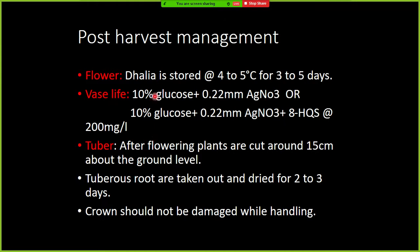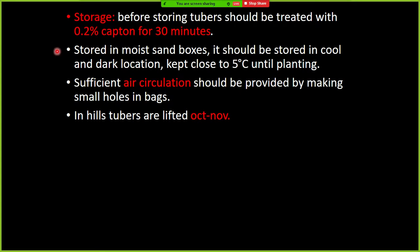For post-harvest management, Dahlias are stored at 4 to 5 degrees Celsius for 3 to 5 days. The vase life solution consists of 10% glucose, 0.22 mM AgNO3, or 10% glucose plus 0.22 mM AgNO3 plus 8-HQC at 200 mg per liter. After flowering, plants are cut around 15 centimeters above the ground level without affecting the crown. Before storing, tubers should be treated with 0.2% captan for 30 minutes to avoid fungal infections, then given sufficient air circulation.